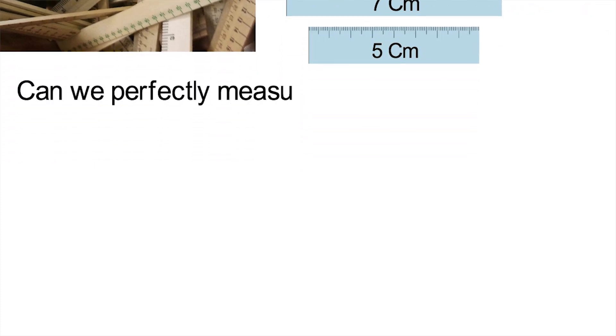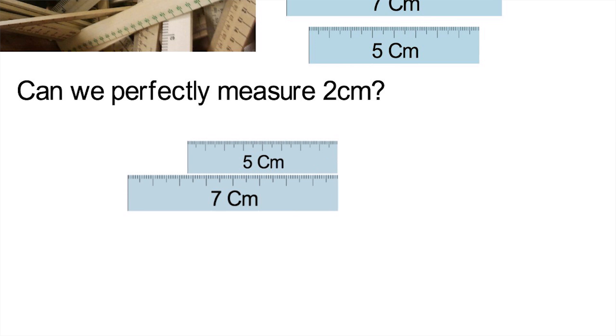The question is, can we perfectly measure a distance of 2 centimeters? Now, this should be pretty easy. You lay down the 7 centimeter ruler, then the 5 on top of that with their ends at the same point. The distance from the beginning of the 7 to the beginning of the 5 would measure 2 centimeters. All we did was take the 7 centimeter ruler, subtract the 5 centimeter one, and we get 2.